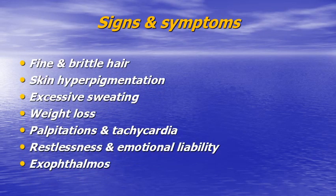Symptoms of thyrotoxicosis include fine brittle hair, hyperpigmentation of the skin, excessive sweating and heat intolerance, remarkable weight loss, tachycardia and palpitations, restlessness and emotional lability, and in some cases exophthalmos — though it is not pathognomonic. Exophthalmos is attributed to increased retroorbital fat deposition, and a bulge in the neck of the thyroid gland may also be noted.